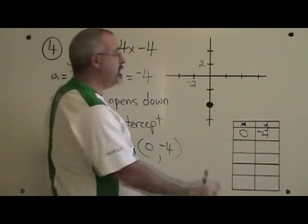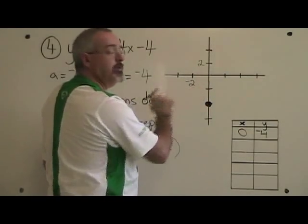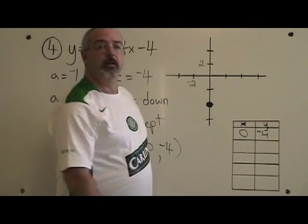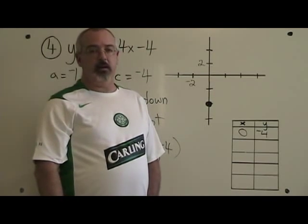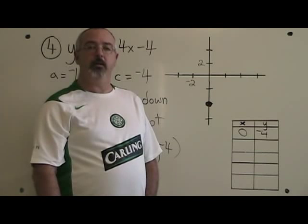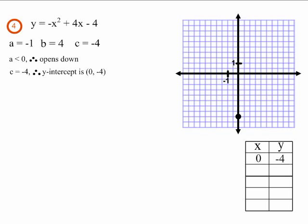This graph is scaled so that each square on the graph is equal to 2 units. This is how you find the a, b, c, the direction of the curve, and the y-intercept for a parabola. This is what example 4 looks like after we find a, b, c, the direction of the curve, and the y-intercept.